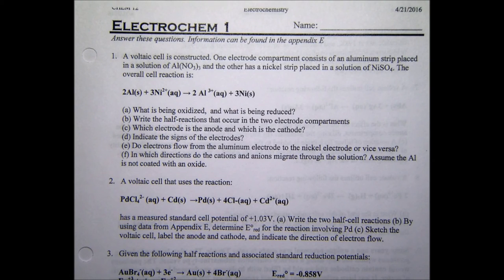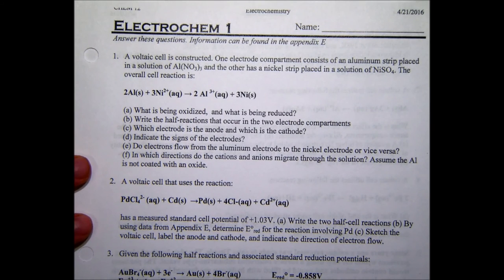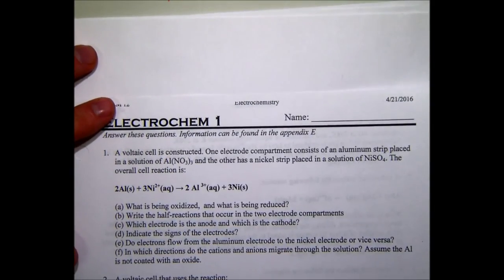In this section we are going to be looking at some electrochemistry problems. We have a handout here, just a set of textbook questions that we'll go through. Question one says a voltaic cell is constructed: one electrode compartment consists of an aluminum strip placed in a solution of aluminum nitrate, the other has a nickel strip placed in a solution of nickel sulfate. The overall cell reaction is given.